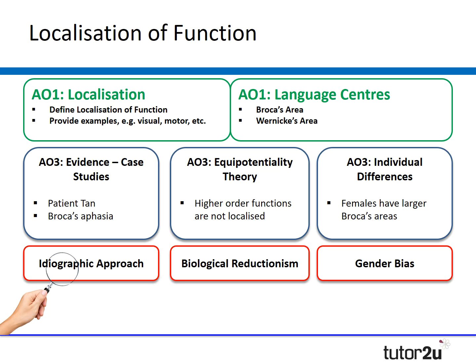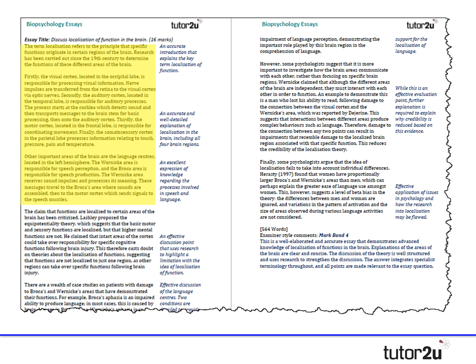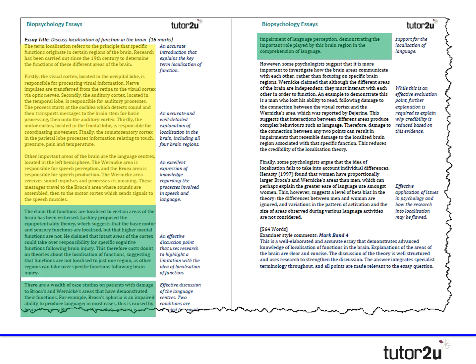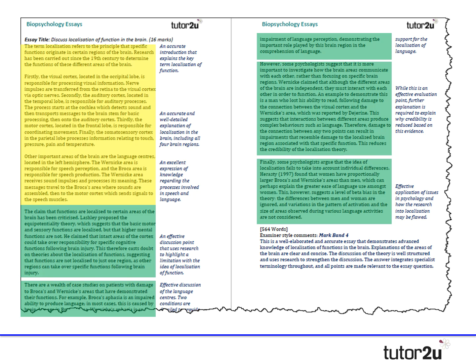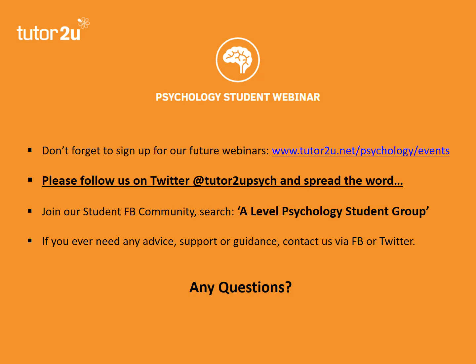There's the full essay plan on screen — AO1 across the first three paragraphs, then three separate evaluation paragraphs in green, coming to about 560 words total. We could trim that to the 500 word limit if needed — a clear, well-balanced essay. Please sign up to future webinars at tutetu.net/psychology/events, and if you've got any questions, reach us via our Facebook group for students or via Twitter. Hope you found that useful — thank you, take care, bye bye.